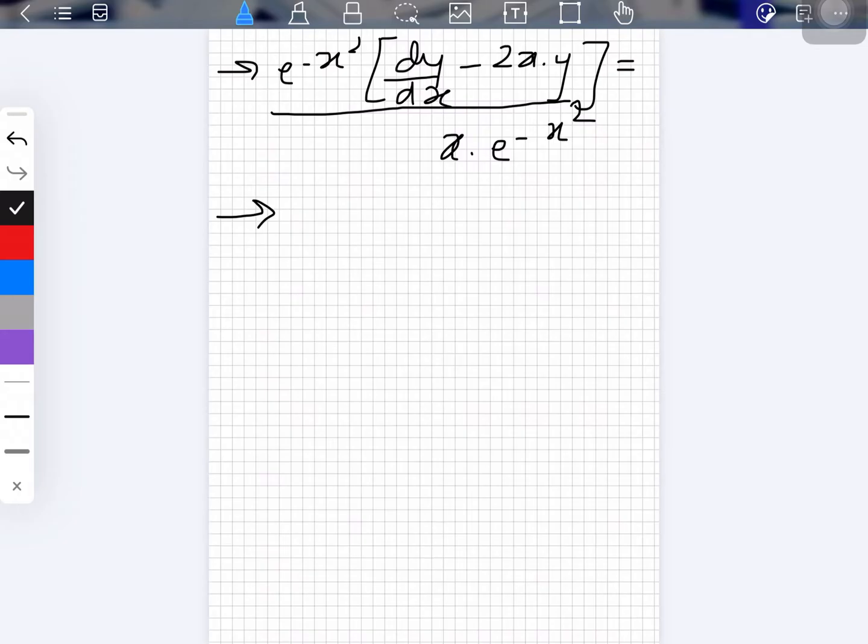Now I've talked about it in my previous video as well. If you are to simplify this with the help of a product rule of derivative, then what you will get is d(y·e^(-x²))/dx, of course with respect to x, and the right-hand side remains as it is.